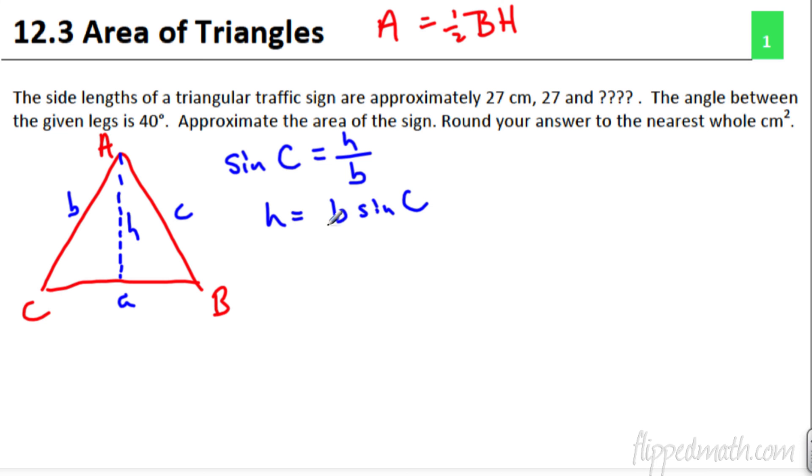h is going to equal b times the sine of C. This works for every triangle, right? So now we're going to go back up to our formula right here. So the area equals one half base times height. The base is actually A, and then the height of the triangle is B times the sine of C. Hey, look what we just did.